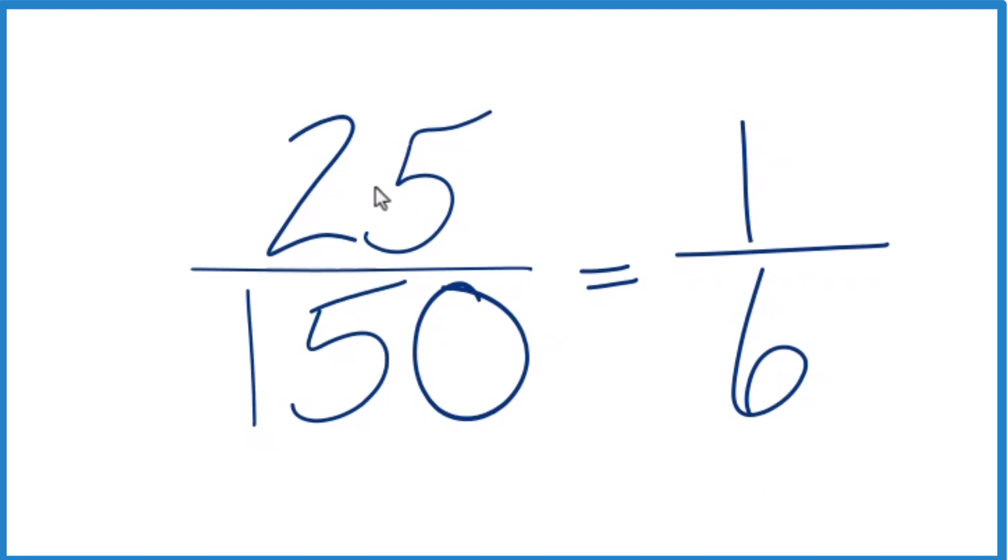These are equivalent fractions. If you divide 25 by 150, or 1 by 6, you get the same decimal value. We've simplified 25 over 150 down to lowest terms. This is Dr. B. Thanks for watching.